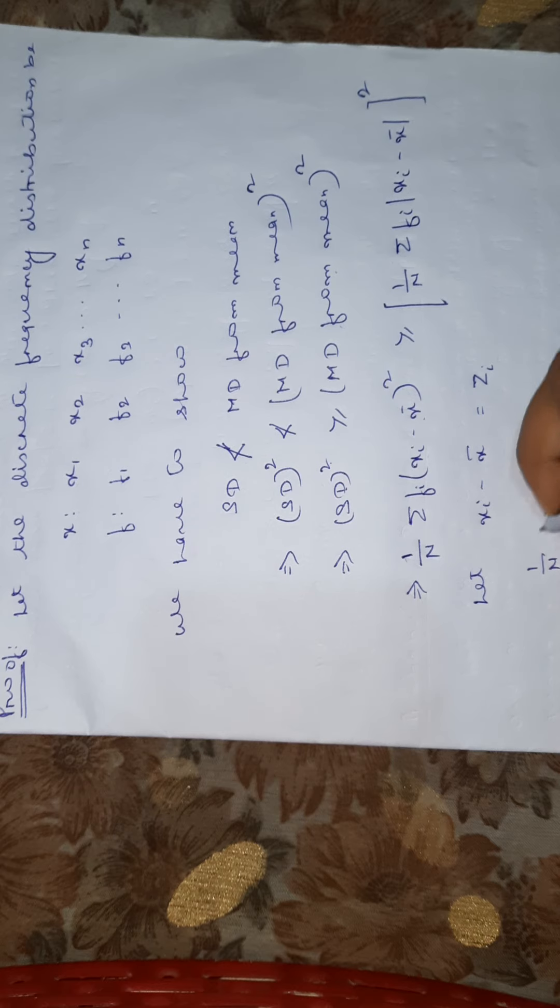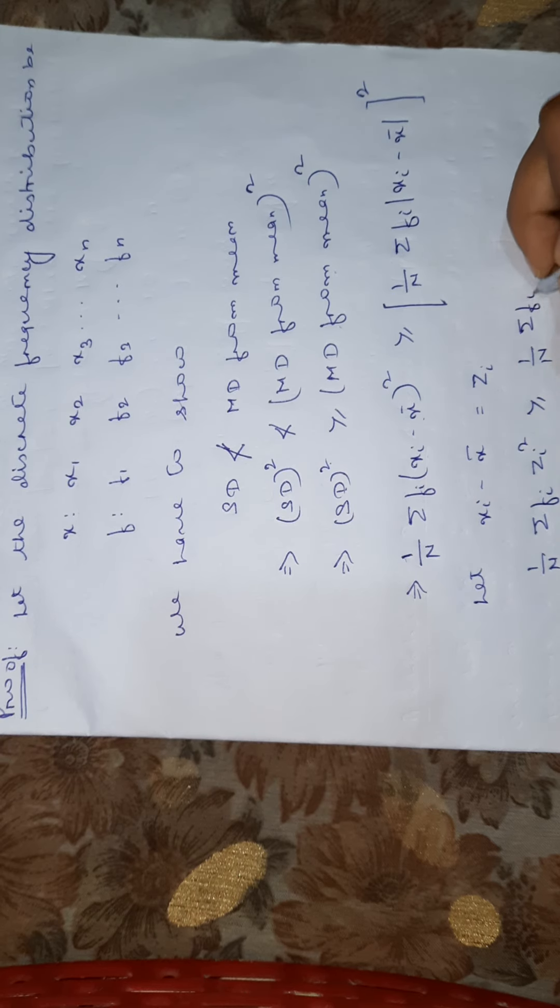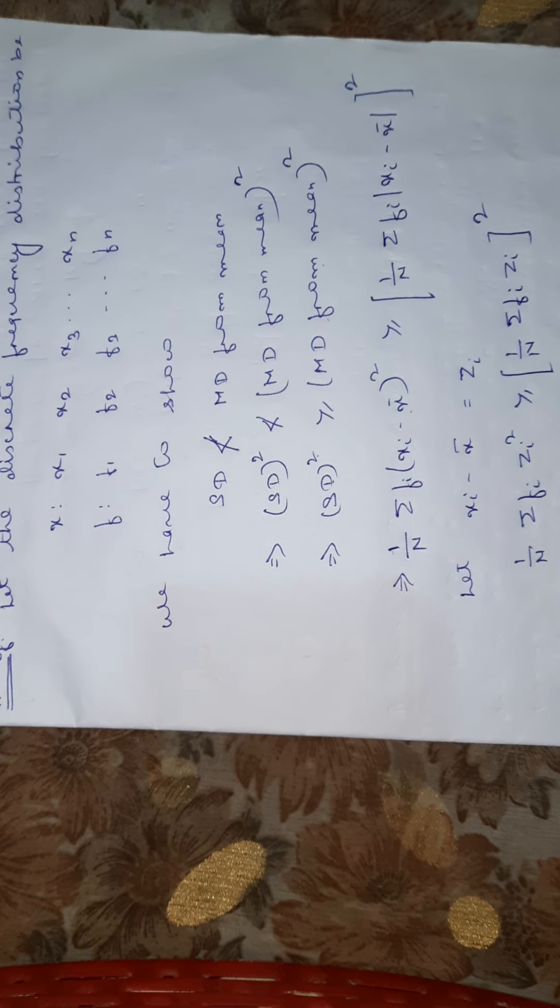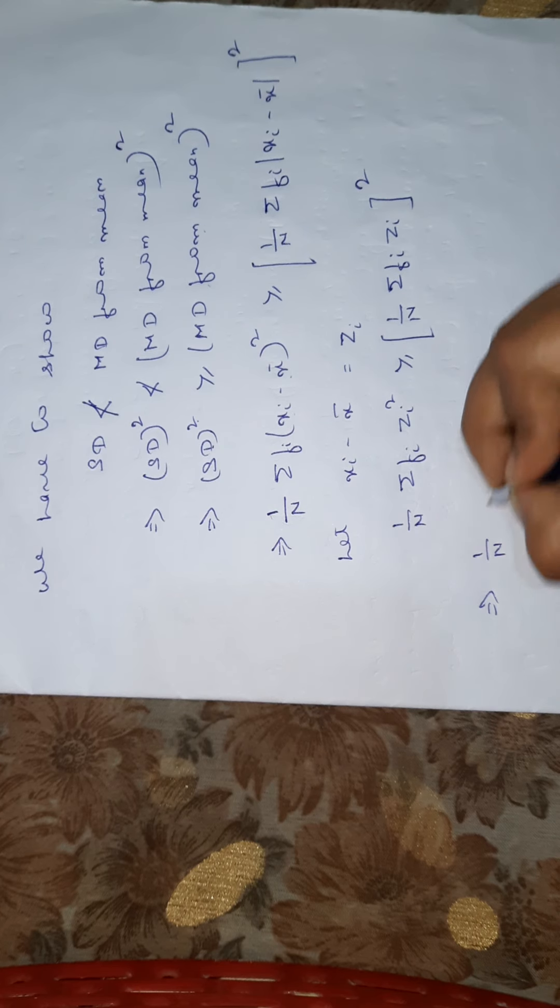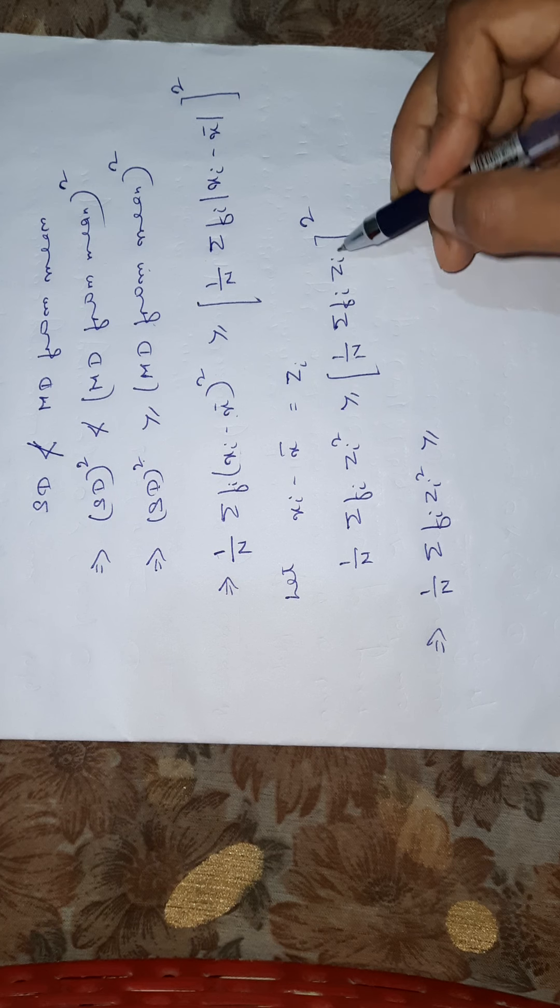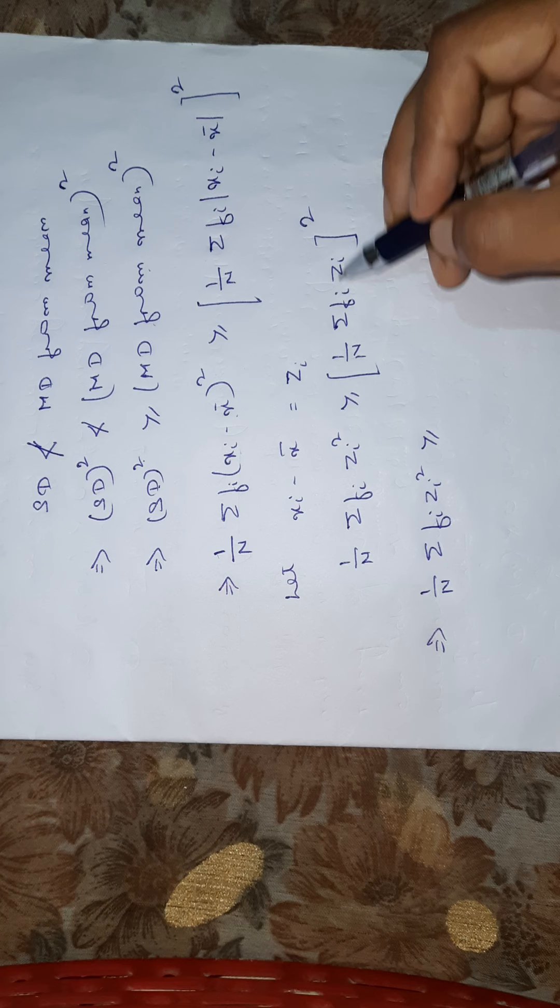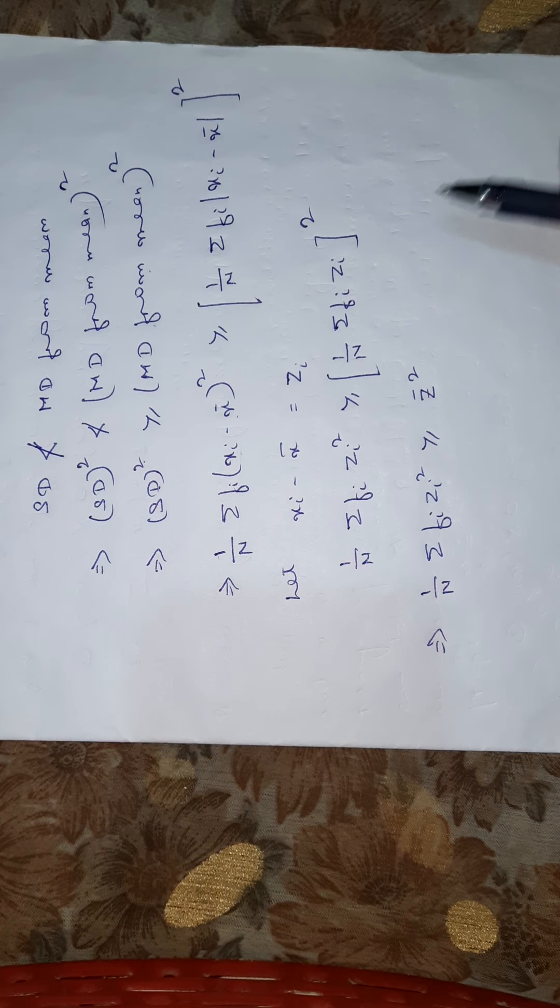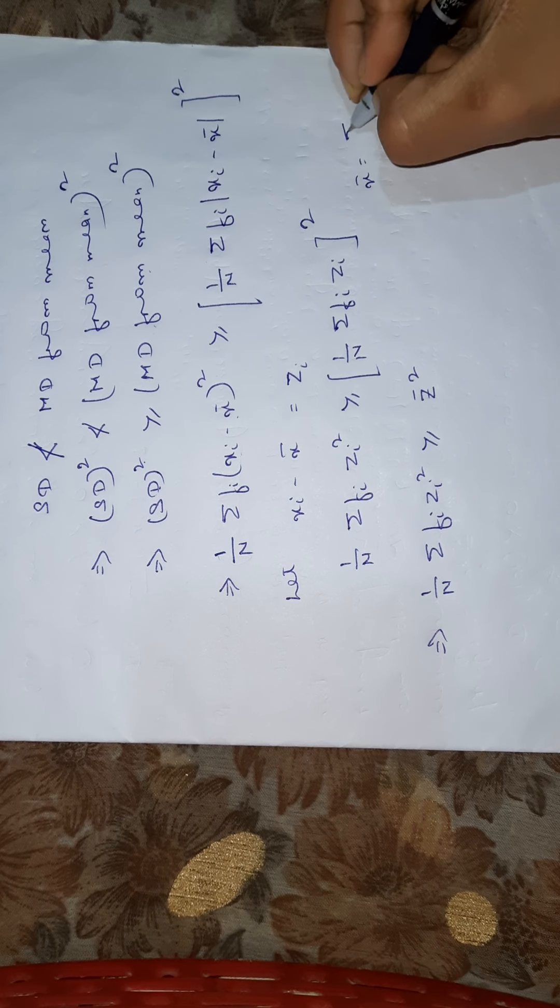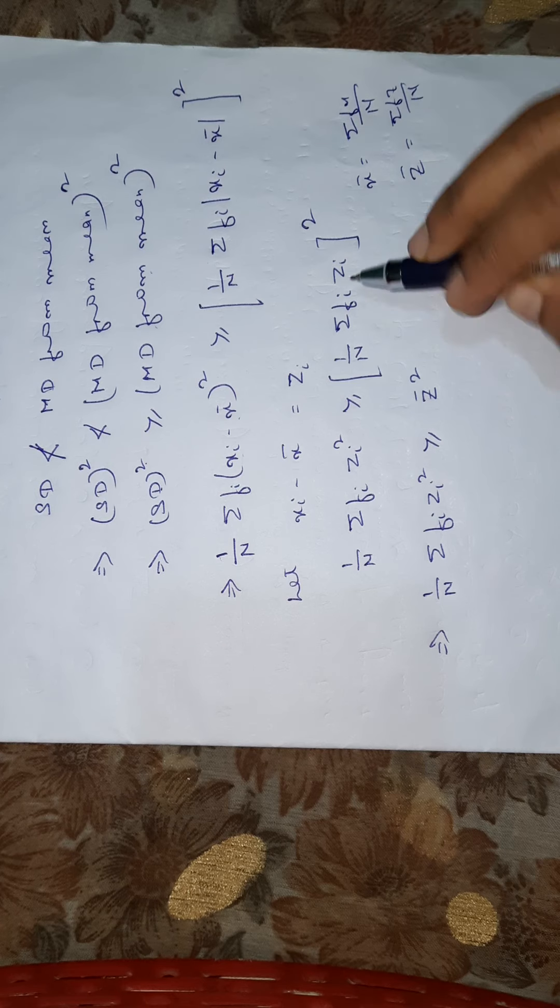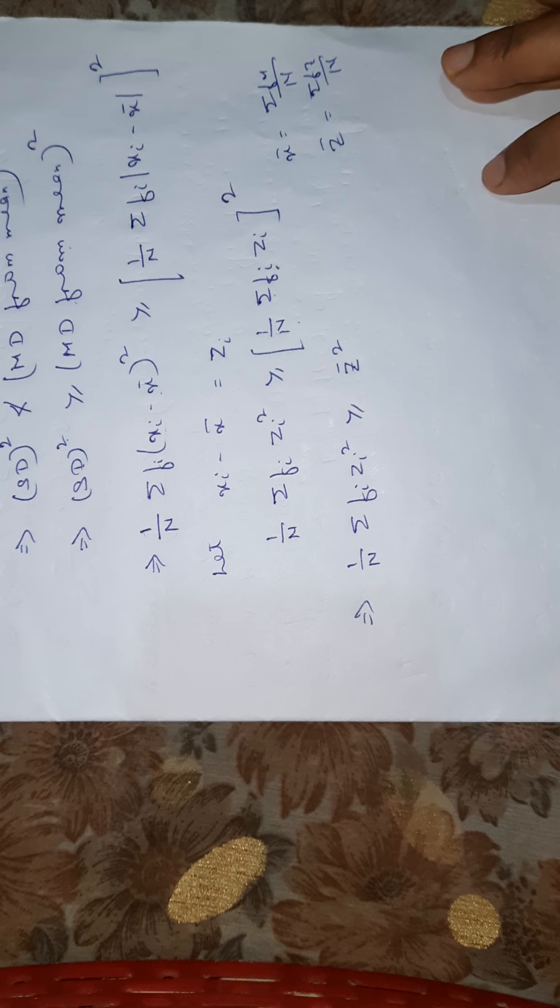So now one by n summation of fi times zi square is greater than or equal to one by n summation of fi times zi, whole square. Here z bar equals summation of fz by n. So we can write one by n summation of fi times zi square minus z bar whole square greater than or equal to 0.